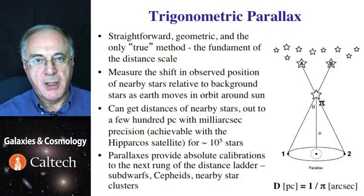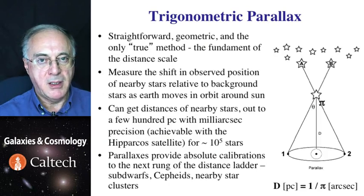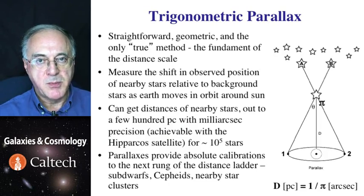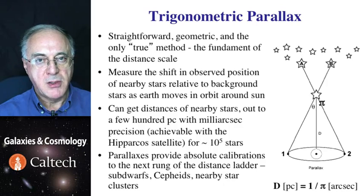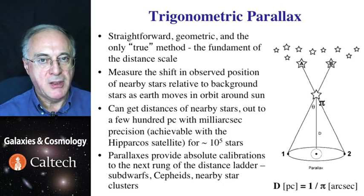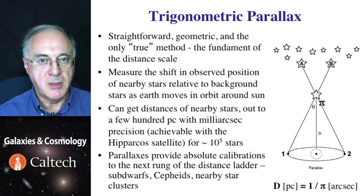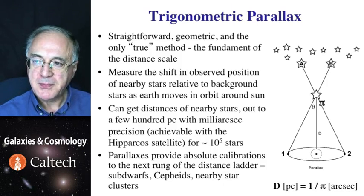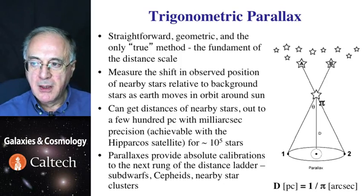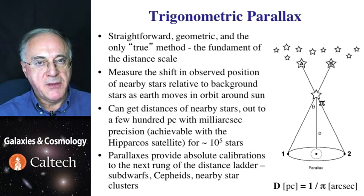The trigonometric parallax is the most basic measurement of distance in astronomy. It is pure geometry and there is nothing uncertain about it. By measuring the annual apparent motion on the sky of a star, we can figure out how far it is, if we know the distance between Earth and the Sun, which we do know with great precision. So the method by itself is safe.